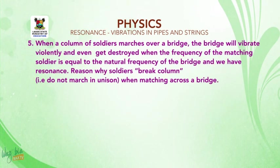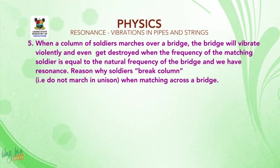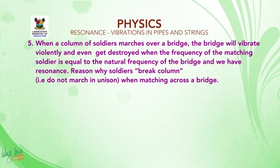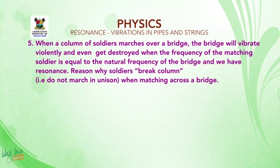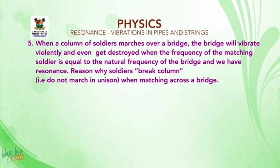5. When a column of soldiers marches over a bridge, the bridge will vibrate violently and even get destroyed, when the frequency of the marching soldiers is equal to the natural frequency of the bridge. 6. And we have resonance — the reason why soldiers break column, that is, do not march in unison when marching across a bridge.